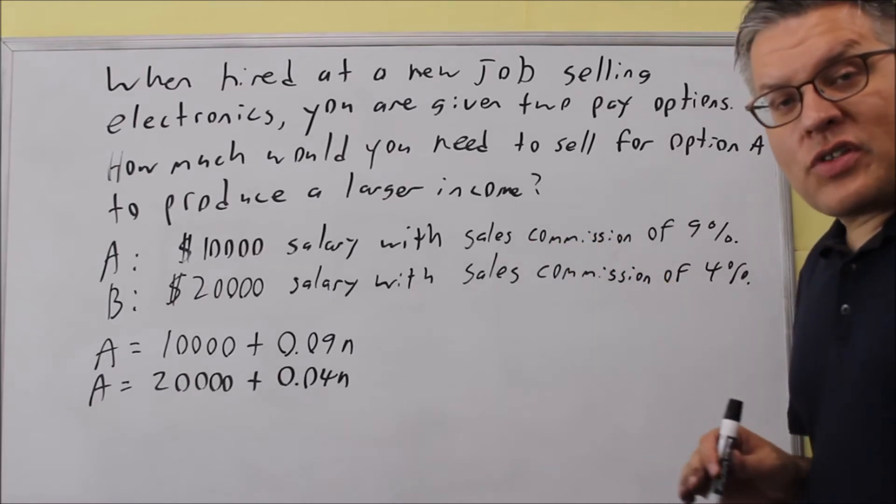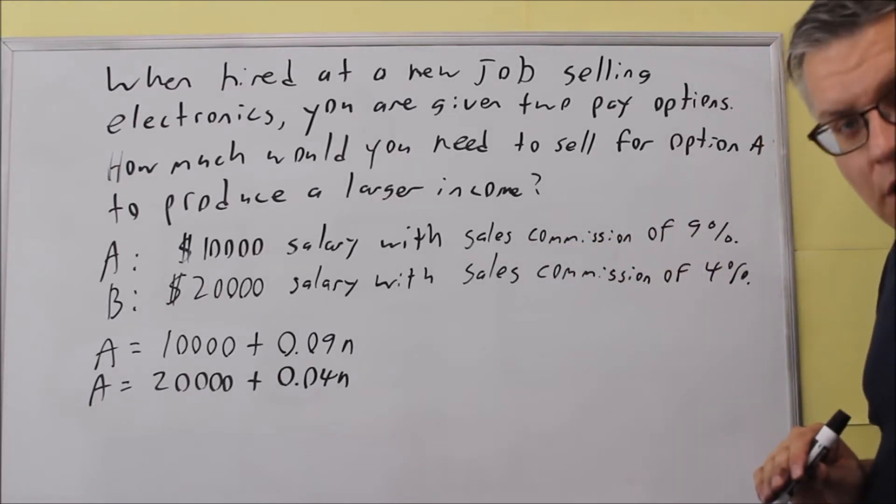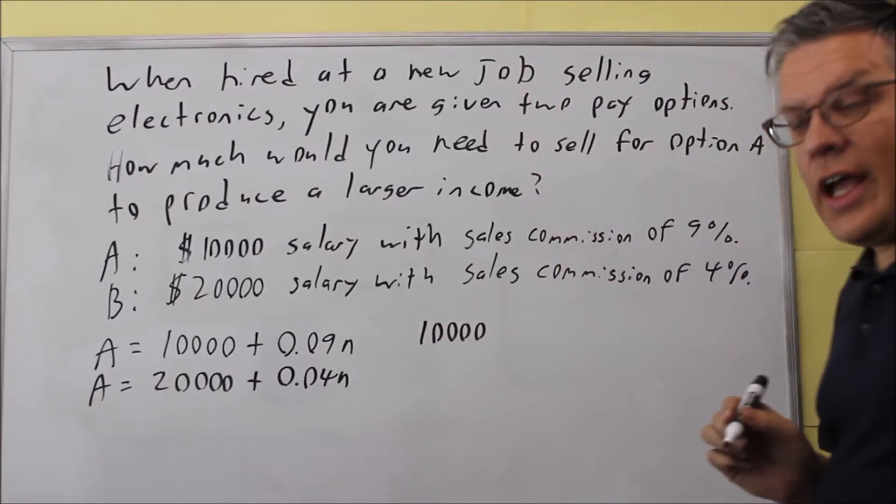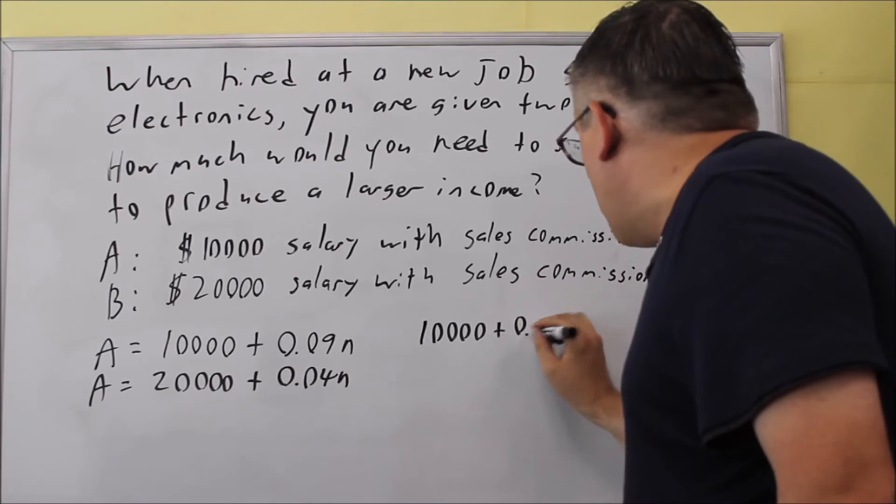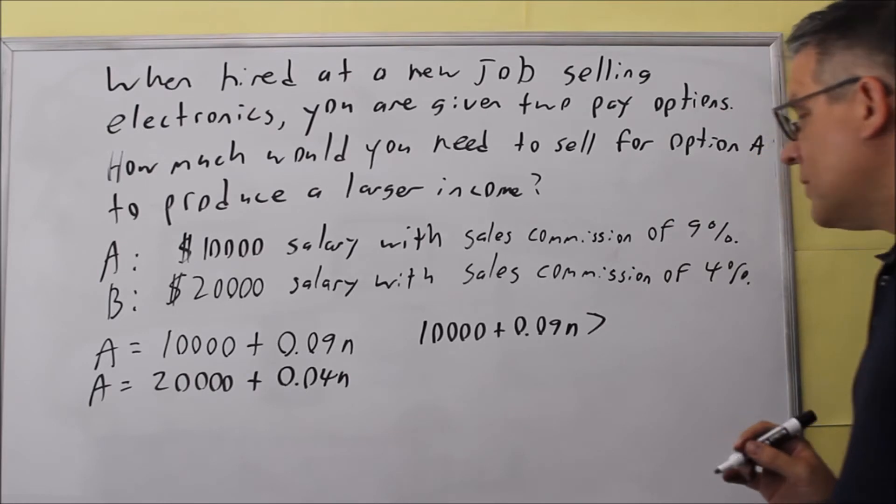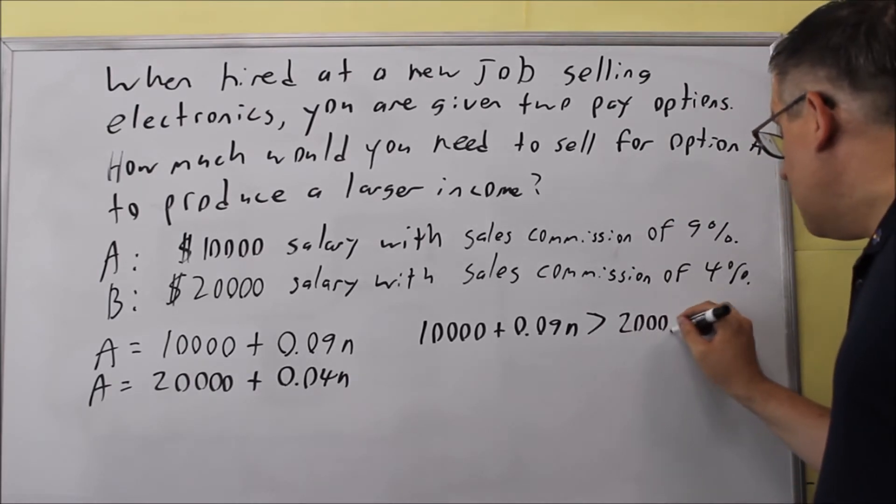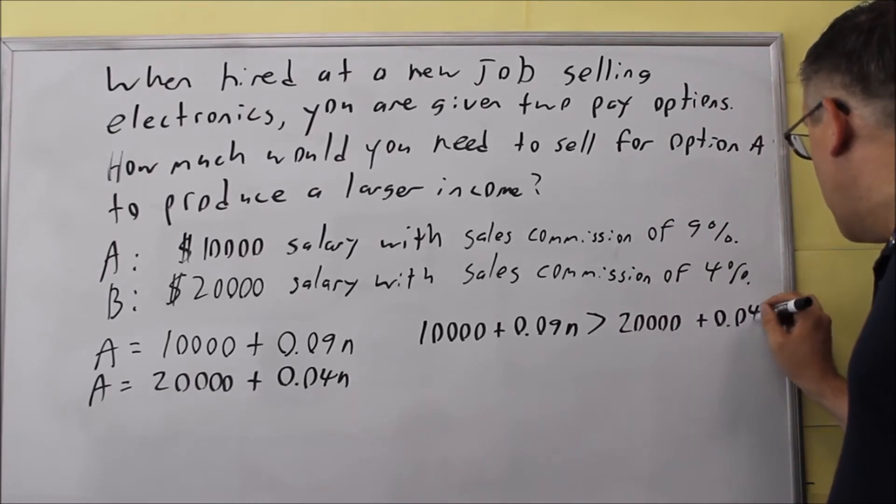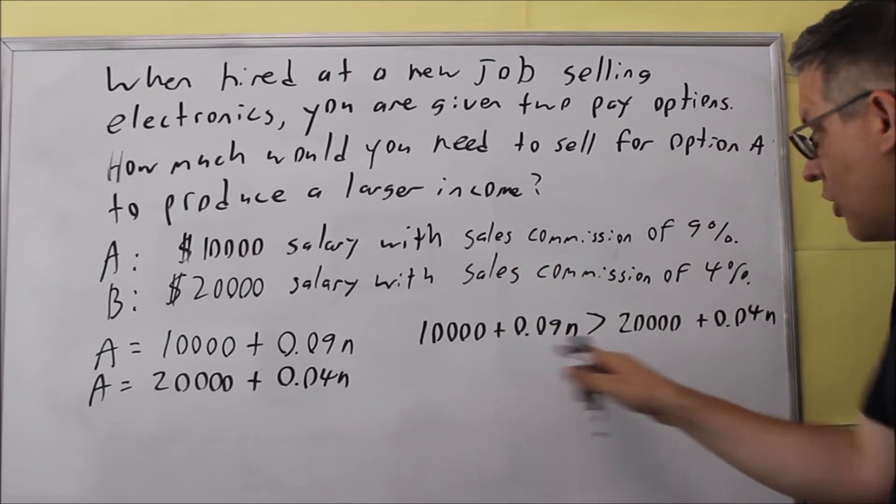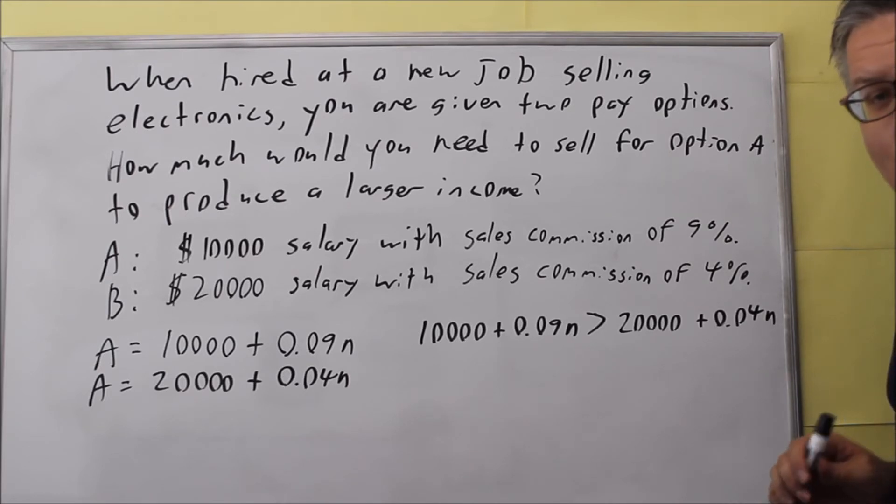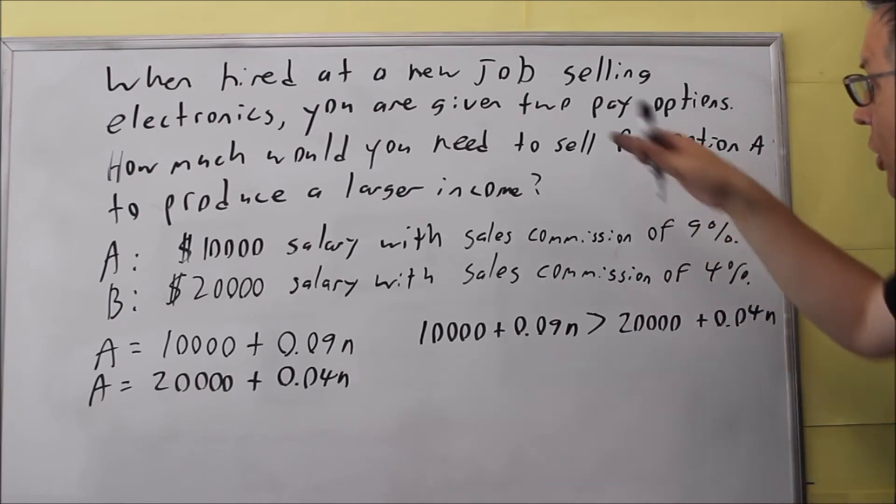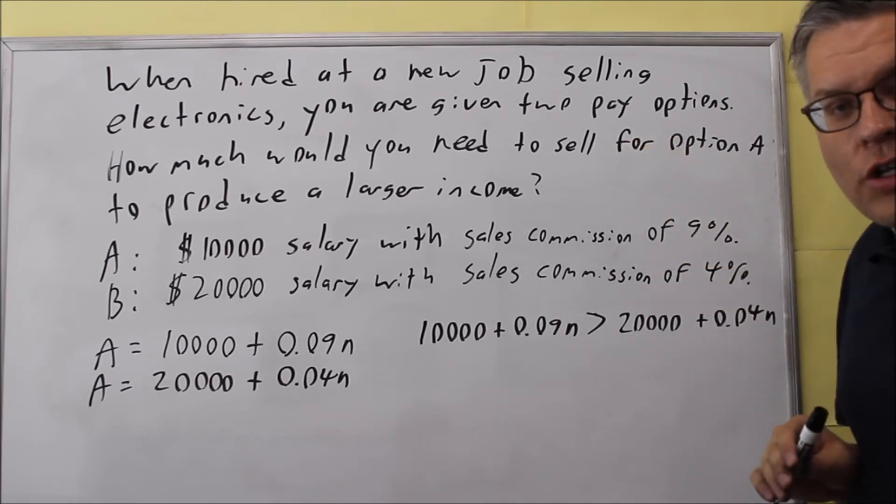Now the inequality we have to set up: we want A to be larger than B. So I'll start with the formula for A: 10,000 plus 0.09n, that needs to be greater than 20,000 plus 0.04n. We want A to be larger than B, and when I go through this and solve, I'll get that n has to be greater than whatever the amount is, and that will tell me how much more I need to sell in order for A to start giving you more income.